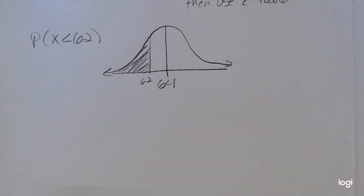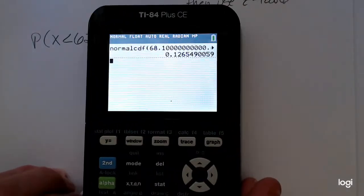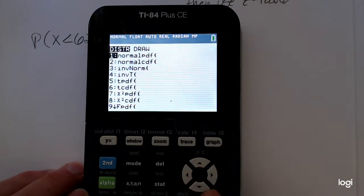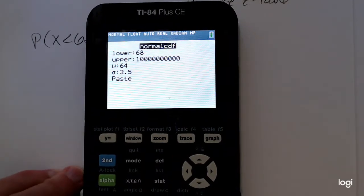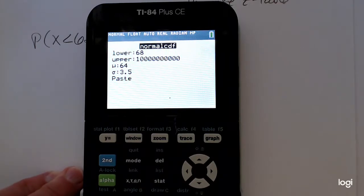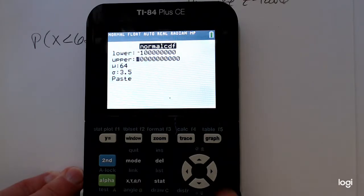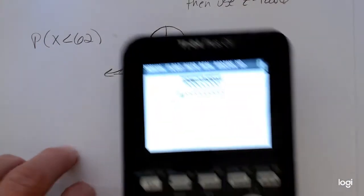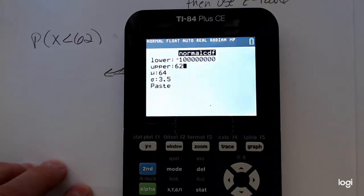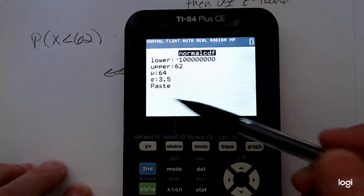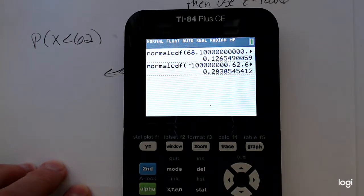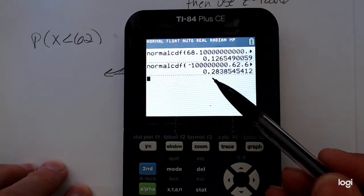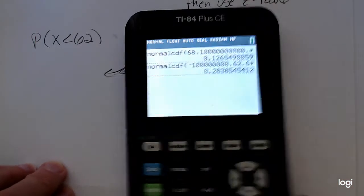Going to my normal CDF function in the calculator, going back to the distribution menu, selecting 2. My lower bound now is an extremely small number, so I want to put in a negative 1 and a bunch of 0s. And my upper bound now is 62 because I'm stopping at 62. And then I want to keep mu and sigma the same.